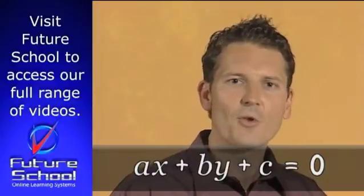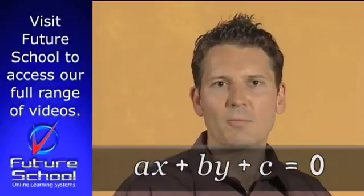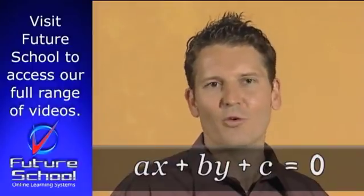Here's the general form of the straight line again, AX plus BY plus C equals zero. There are some important things to know about this general form.